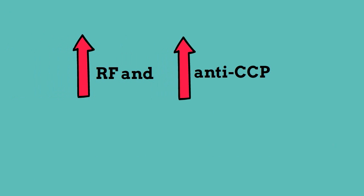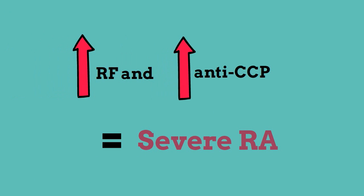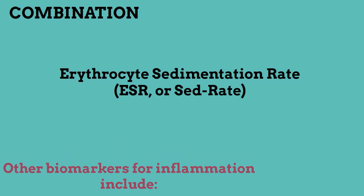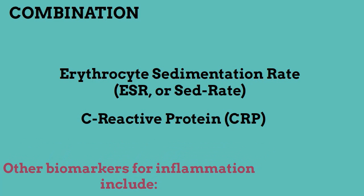Testing positive for both antibodies indicates severe RA. Number four: inflammation can also be indicated for RA via elevated levels of erythrocyte sedimentation rate (ESR), or sed rate, and C-reactive protein (CRP) level, which are also biomarkers for inflammation.